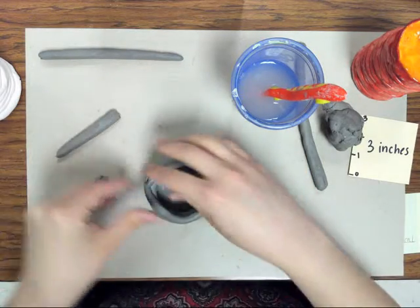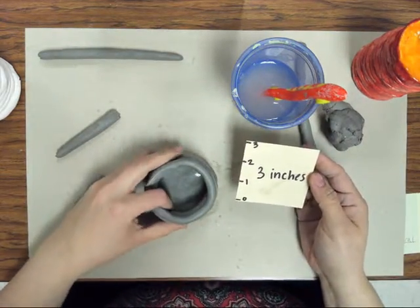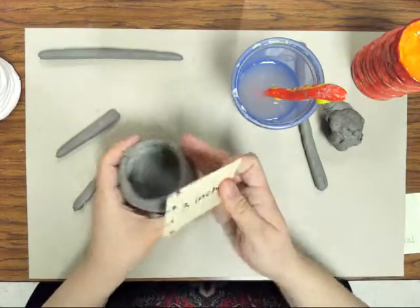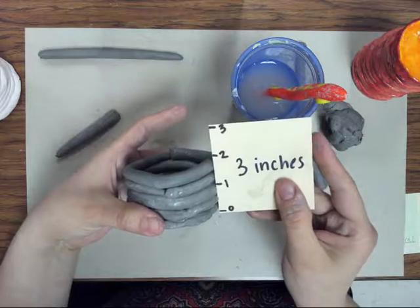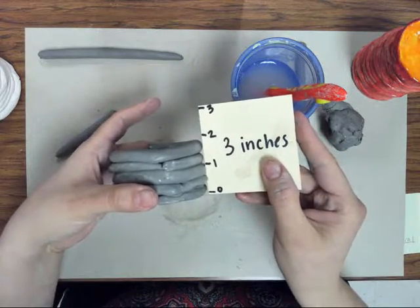Once you have it nice and tall, you want to check. I'm going to give you a little paper that says 3 inches. You want to just set it beside it and you're going to see how tall it is. Because right now I just have it 2 inches.